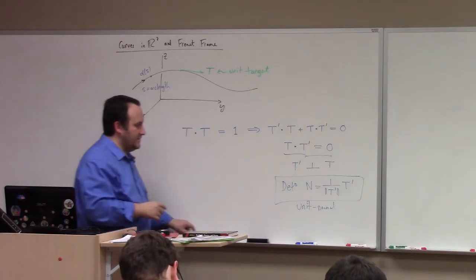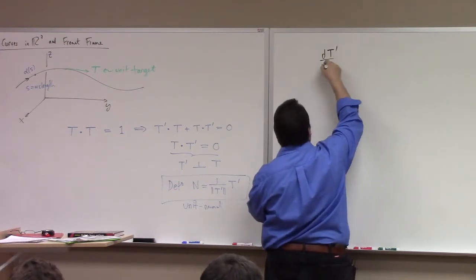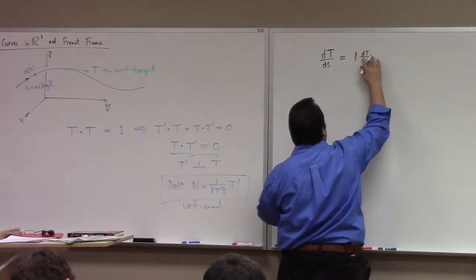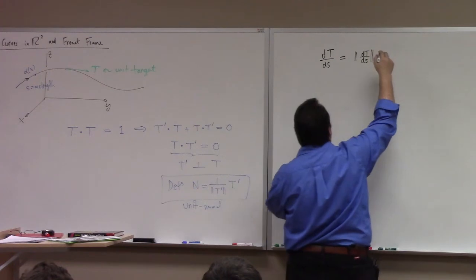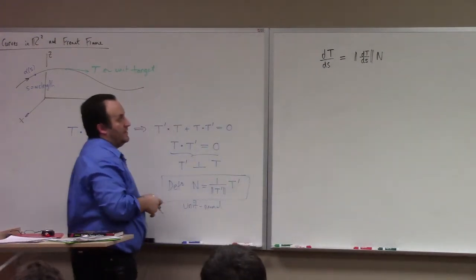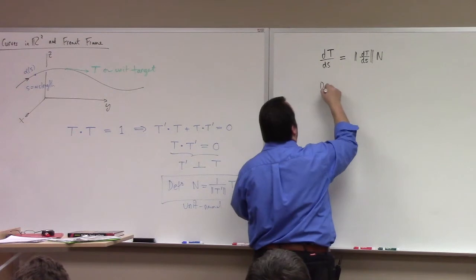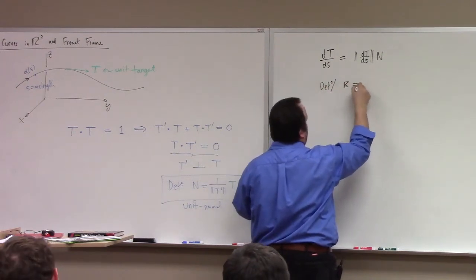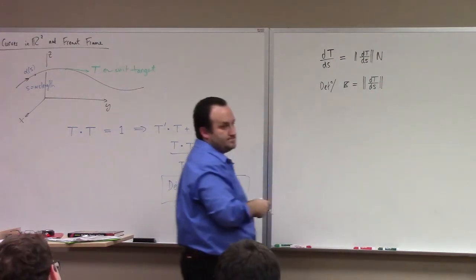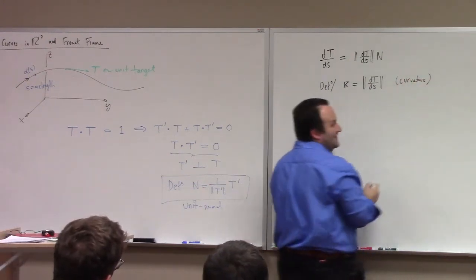And, if T prime is non-zero, we can normalize it. And, in so doing, form what's called the normal vector. Okay? So, definition, N is equal to 1 over the length of T prime times T prime. This is the so-called unit normal. Now, more than this, you notice that we've got an equation here, right? We've got T prime, which is really dT/ds, I'll write that out, dT/ds is equal to what? It's equal to the length of dT/ds times the unit normal, right?